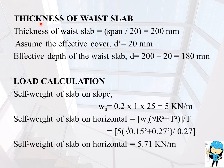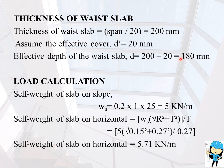The next step is to calculate the thickness of the waist slab. Thickness of waist slab equals span divided by 20, so 4050 mm divided by 20 gives 200 mm. Assuming effective cover D' equals 20 mm, the effective depth of the waist slab D equals 200 minus 20, which is equal to 180 mm.